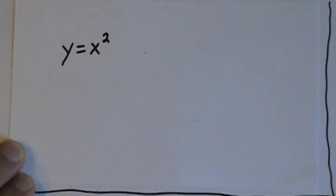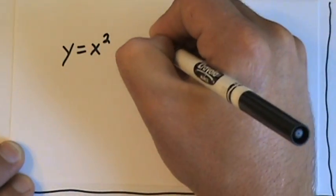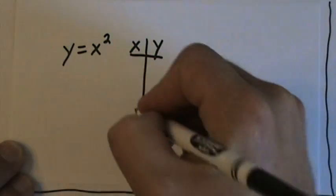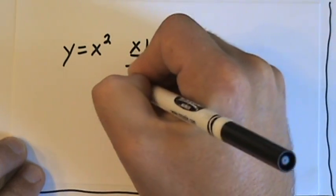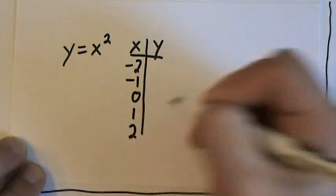Now anytime we're trying to graph a new function, it's a good idea to plot some points and see what the function looks like. We can use an xy table to do that. So what we're going to do here is choose some values of x and see what y would be. For example, negative 2, negative 1, 0, 1, and 2.